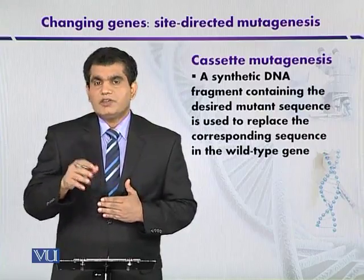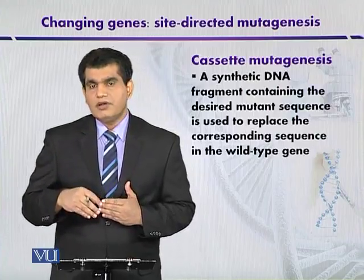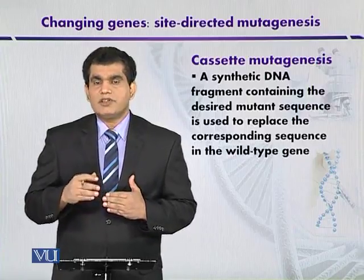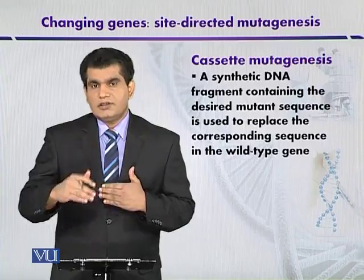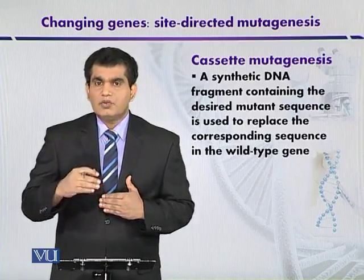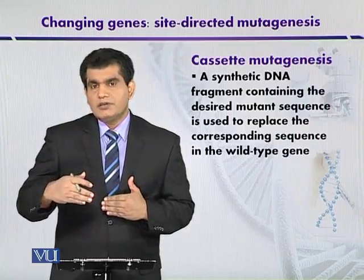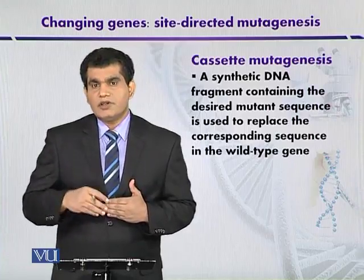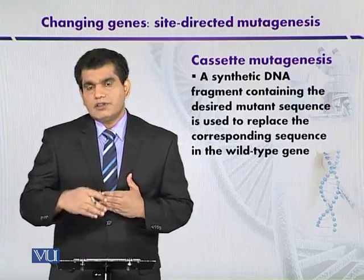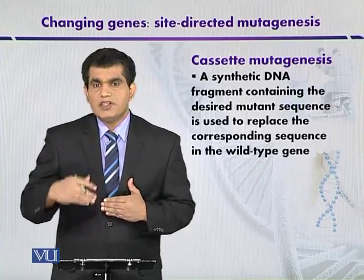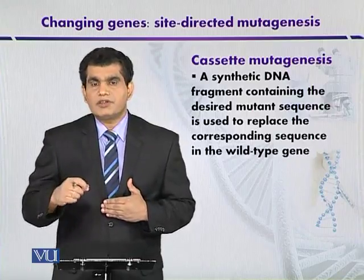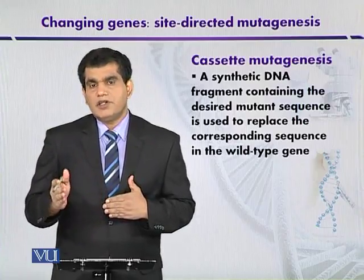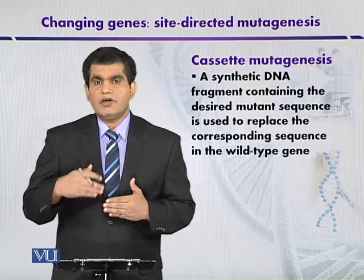In cassette mutagenesis, if the target gene is present within a recombinant vector, it can be mutated. For this purpose, we must have two target sites flanking our target DNA so that by using a restriction enzyme, the wild type DNA fragment can be removed and replaced with a synthetic DNA fragment. In this way, the DNA alteration efficiency may be around 100%. The basic prerequisite is that target sites for restriction endonuclease must be available, so we can remove the wild type fragment and replace it with our own synthetic fragment of our chosen sequence.